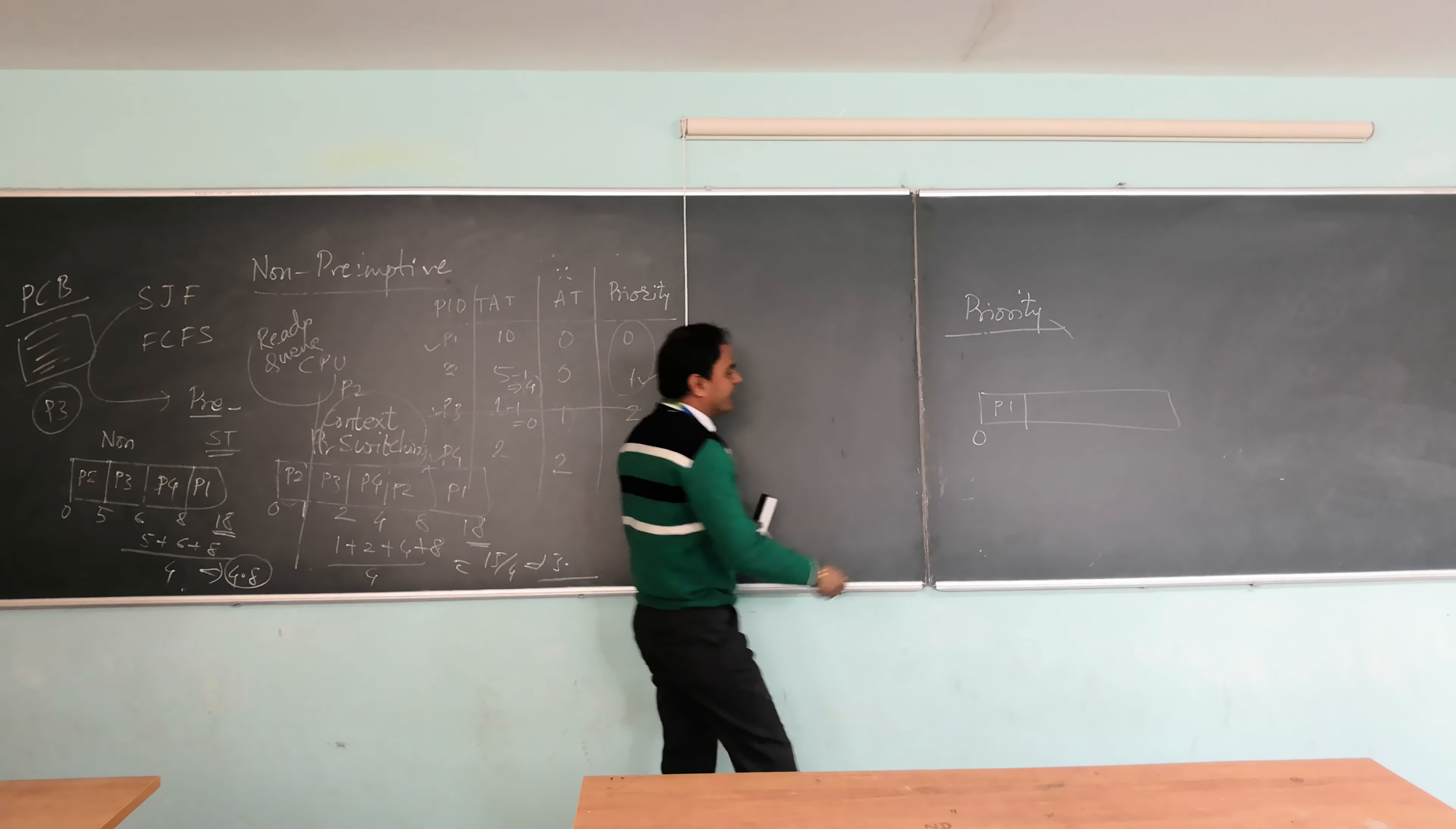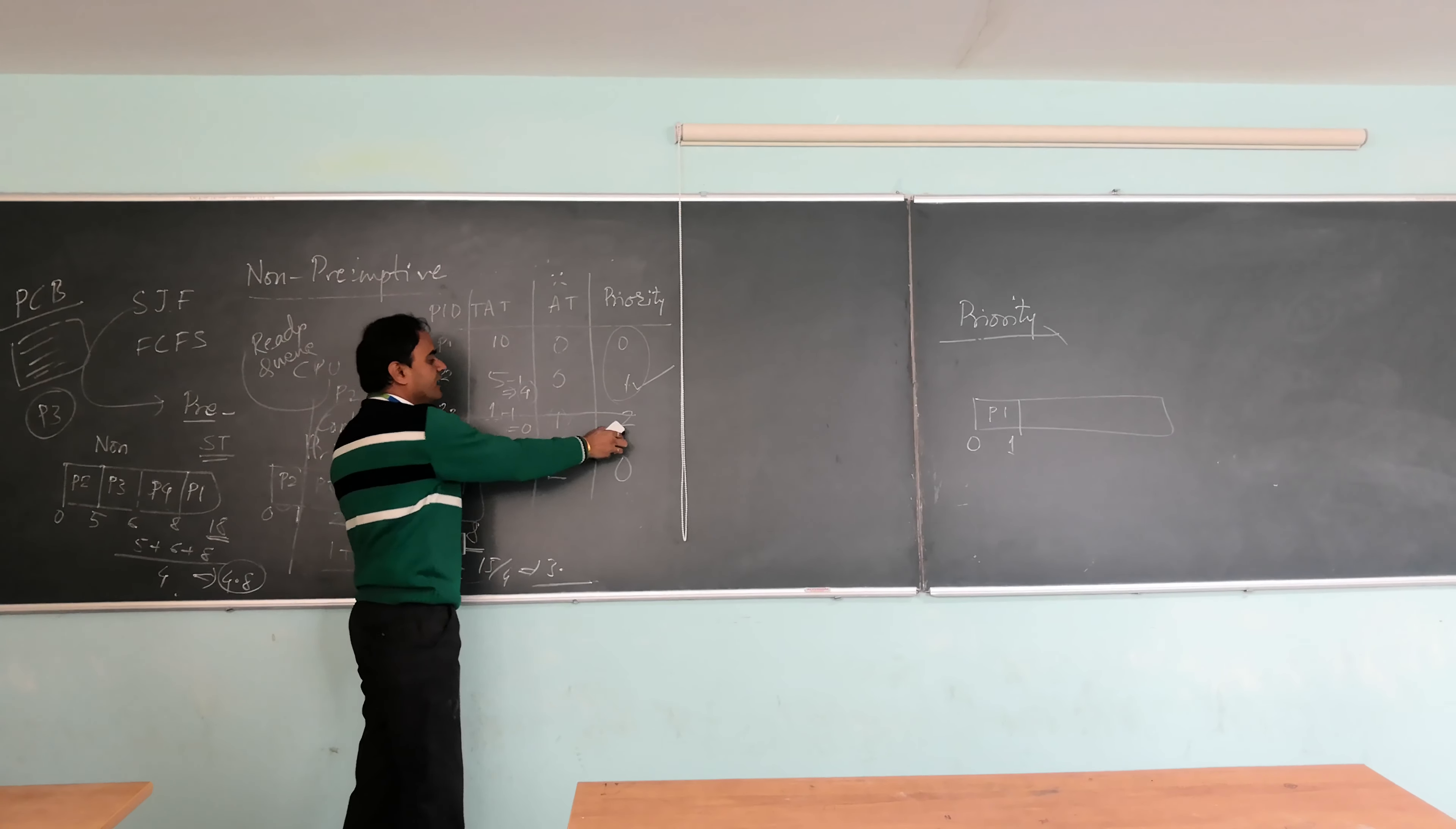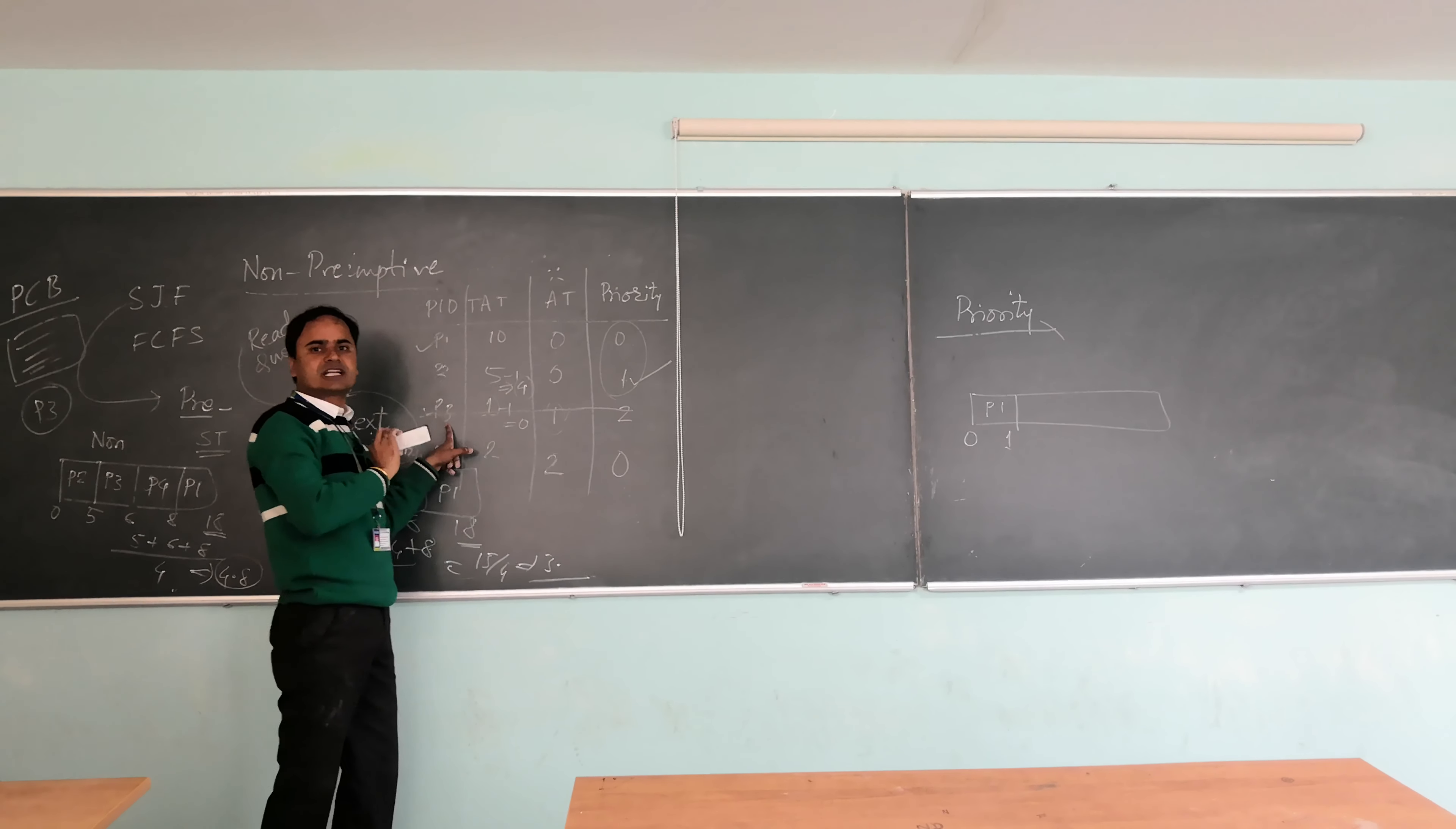Again, at 1, just like this amount of time, you will understand that there is one more process coming into picture, that is P3. But unfortunately its priority is higher than this, so there is no change. So execution of P1 will start, no context switching.